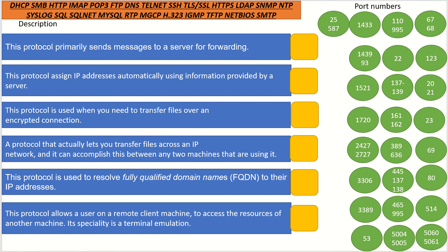As you can see at the top here in the orange box, we have the names of the internet protocols. Below them we have their descriptions, and on the right side we have their port numbers. All of them are mixed up — we need to match them with their port number and choose their correct internet protocol.